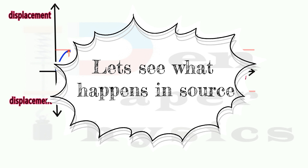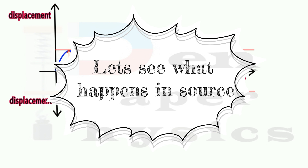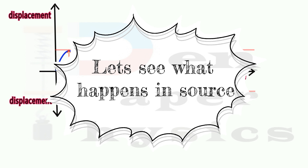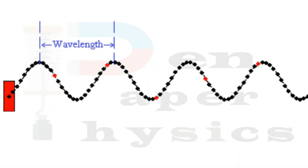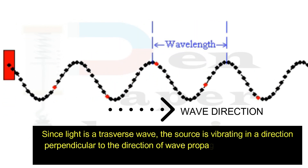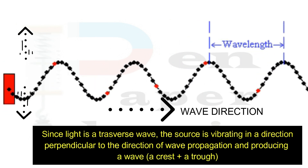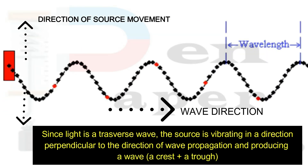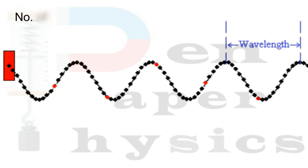Now let us see what happens inside a source which is producing a transverse wave. As we can see in this video, a transverse wave is produced when the source is vibrating in a direction perpendicular to the direction of wave propagation. In this propagation it is producing a wave — a crest and a trough. In short, a crest and a trough together make one complete wave.